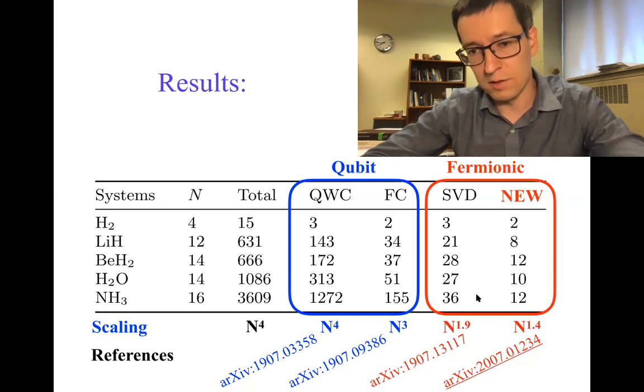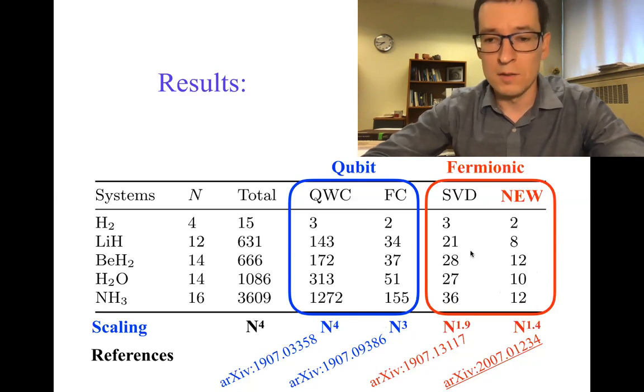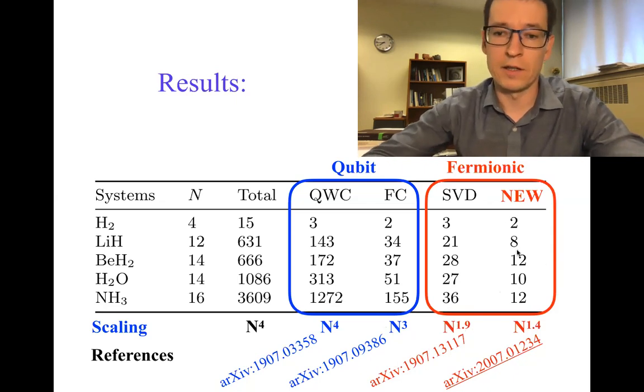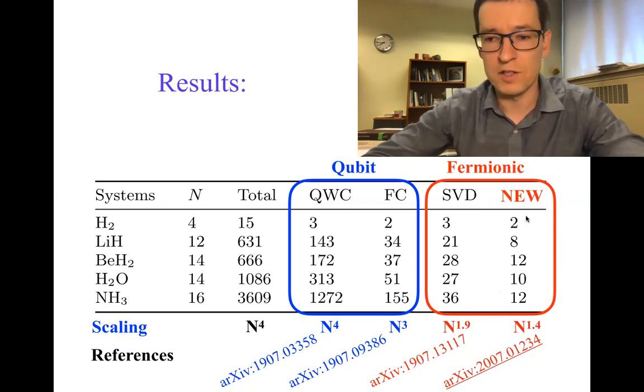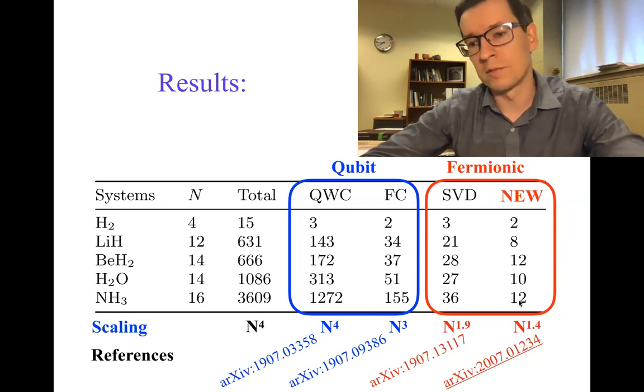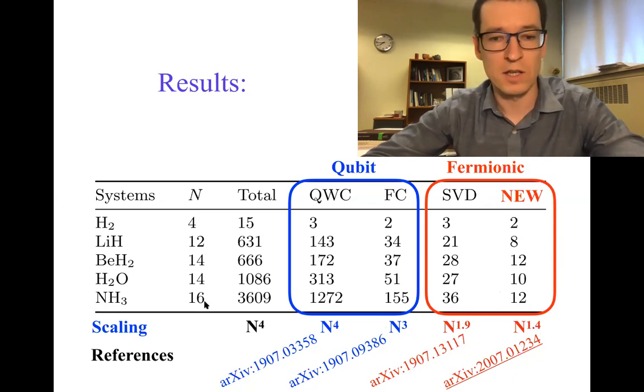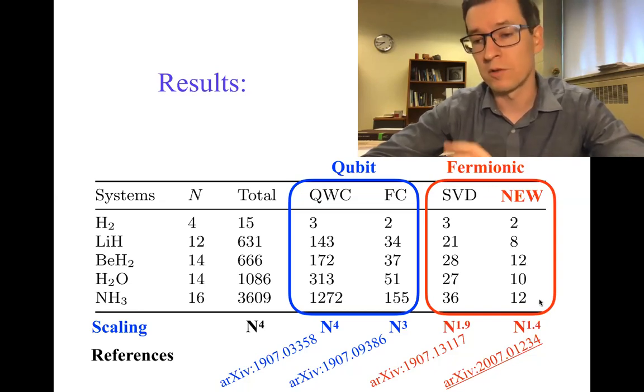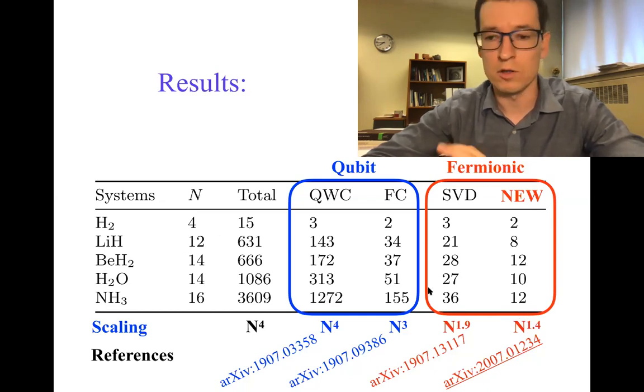Now, the next are the techniques that use fermionic algebra. The previous record holder, this technique suggested here, using the SVD decomposition, and as you can see, our technique can improve on the previous one at least three times on average, and the most impressive reduction is in the case of ammonia, where 3600 terms can be measured by forming 12 groups. So, that's 300 times reduction, and the scaling is close to 1.5. I guess for the larger molecules, it's probably going to go to linear, but for small molecules, it's just relatively close to 1.5.